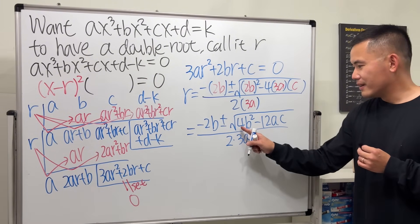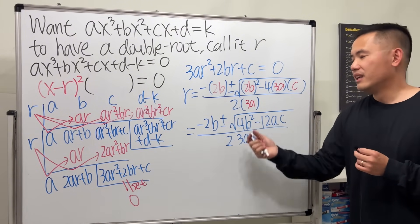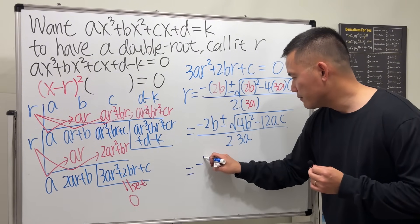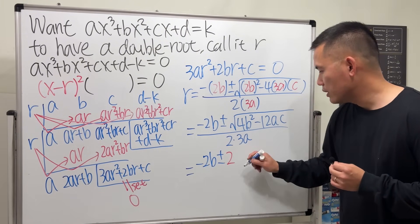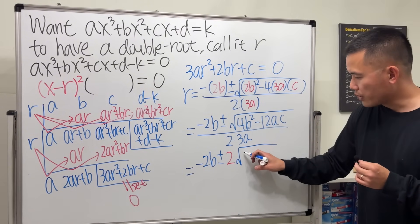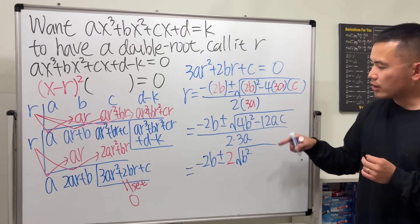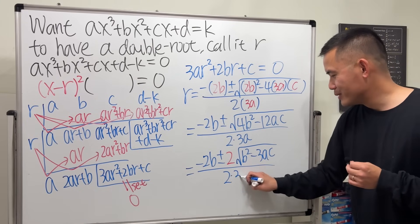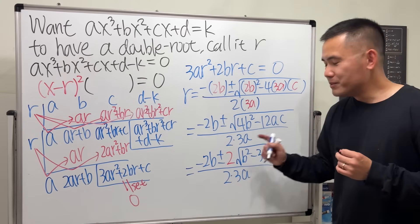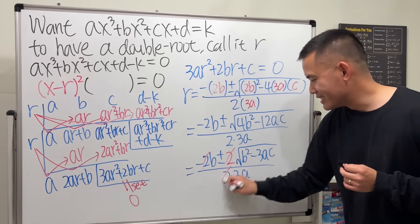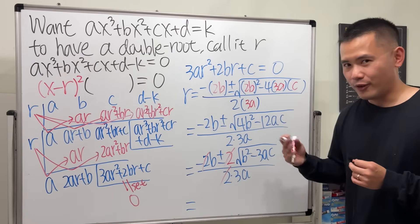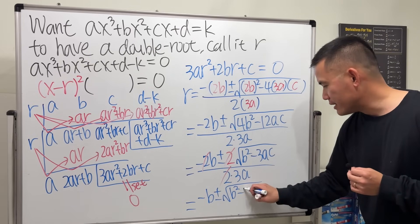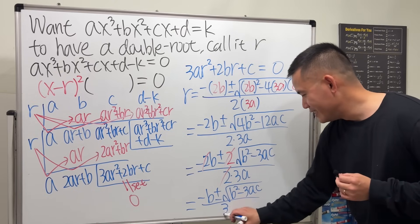We can factor out 4 from inside the square root; bringing it outside gives us 2. So this is negative 2b plus or minus 2 times square root of b squared minus 3ac, over 2 times 3a. Both terms on top have 2s that cancel with the 2 in the denominator. So the formula we have is: r equals negative b plus or minus square root of b squared minus 3ac, all over 3a.